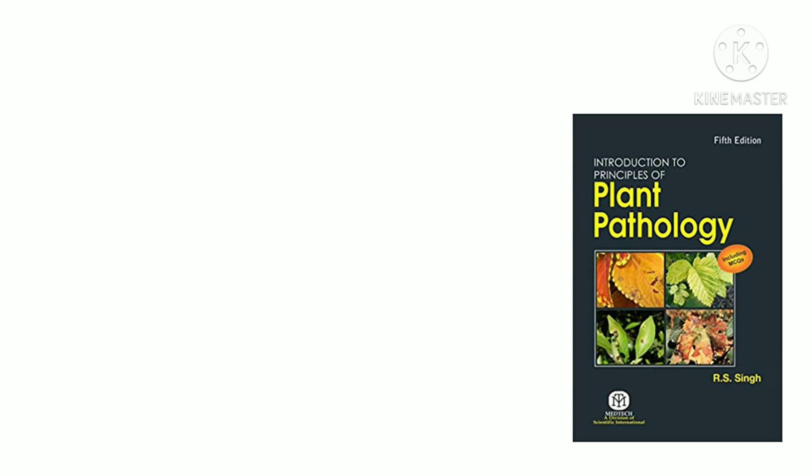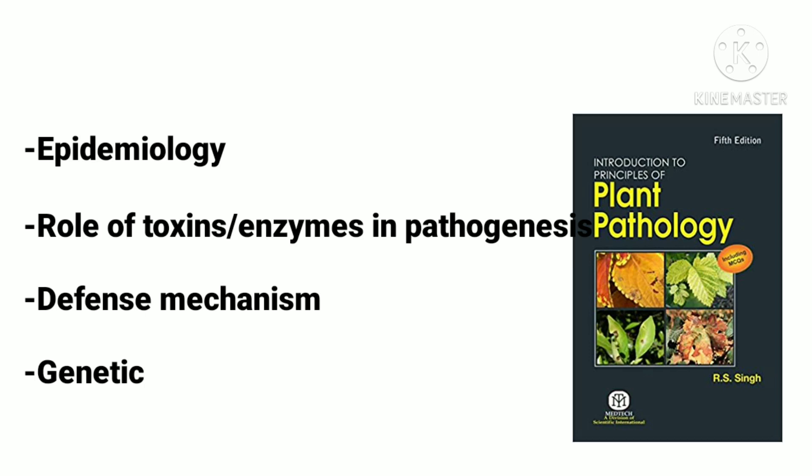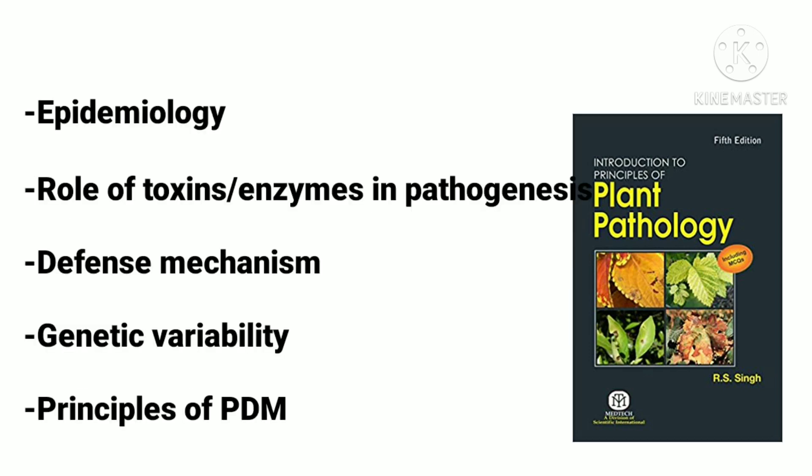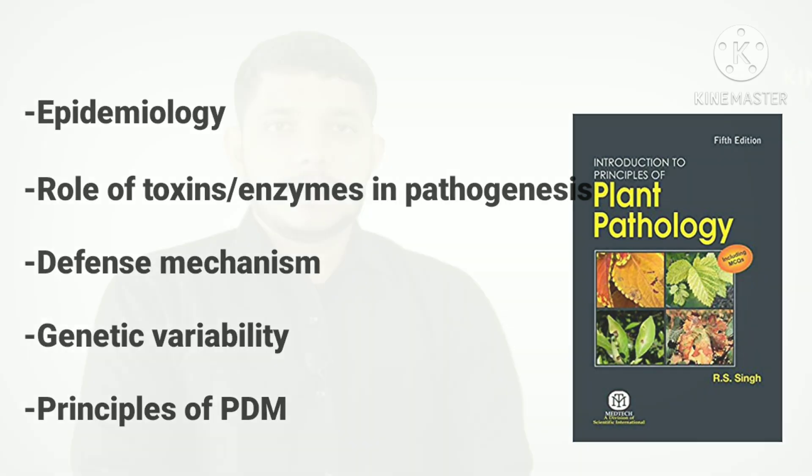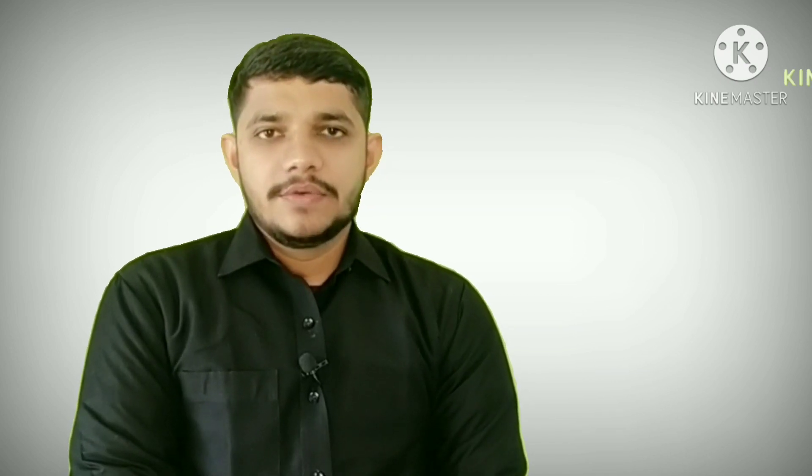Moreover, it contains important chapters such as epidemiology, role of toxins and enzymes in pathogenesis, also defense mechanism, genetic variability, and principles of plant disease management. In this edition, multiple choice questions have been added for the benefit of readers. The price of this book is around 332 rupees, available on Amazon. You may find the link in the description box.